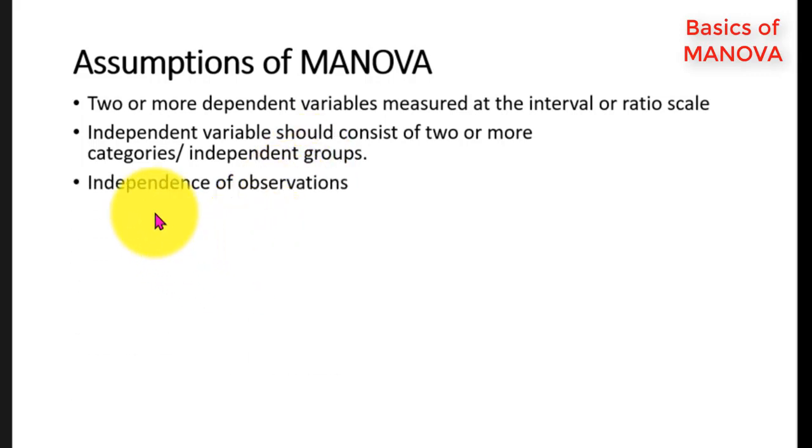Third, there must be independence of observations, meaning thereby observations should be independent of each other. Sample size must be adequate to perform multivariate analysis of variance and there should not be any outlier in the data file.